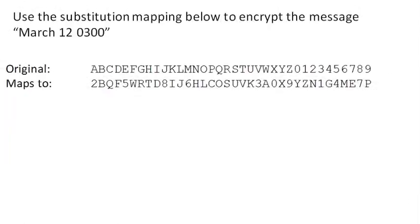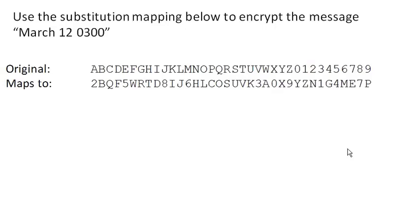Let's use a substitution mapping to encrypt 'March 12th at 0300 hours.' In this case we have a random substitution cipher — an alphanumeric one that includes numerals 0 through 9. These have been randomly shuffled, which creates a much larger set of possible encryptions than the basic shift cipher.